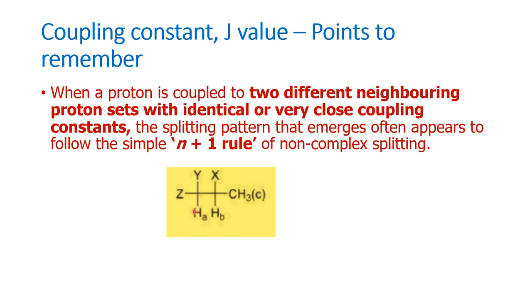HA will also be a doublet, HC will also be a doublet. Only thing is the intensities will be different. In the sense, HA is due to one proton, whereas HC will be due to three protons. Now, when we are having a proton which is surrounded by two different types, non-equivalent protons, what could happen?